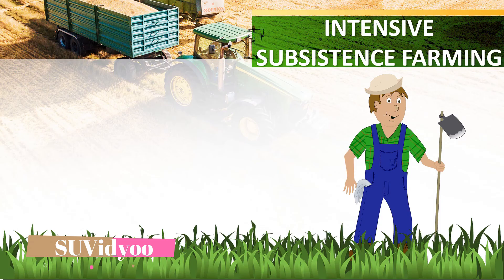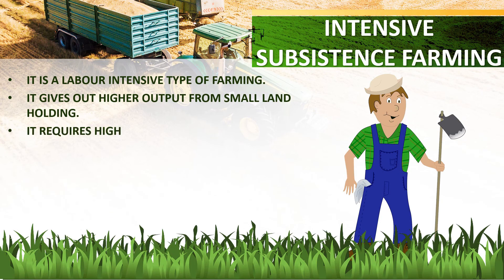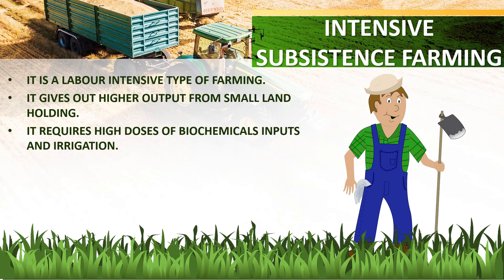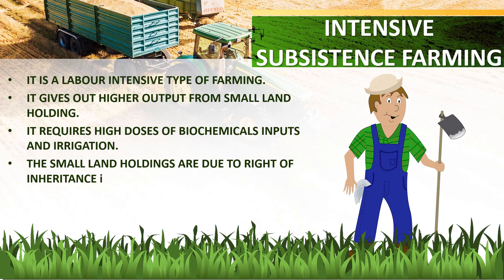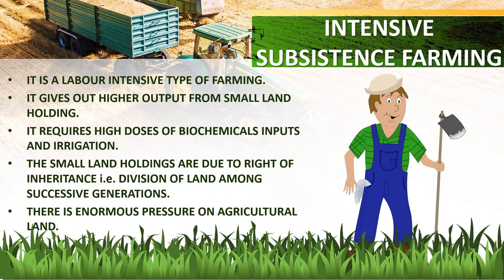Intensive subsistence farming is a labor-intensive type of farming. It gives out higher output from small land holdings. It requires high doses of biochemical inputs and irrigation. The small land holdings are due to the right of inheritance, i.e., division of land among successive generations. There is enormous pressure on agricultural land in intensive subsistence farming.